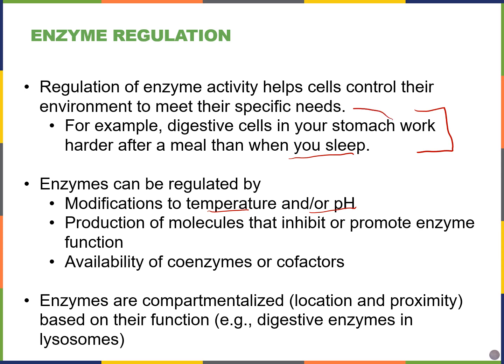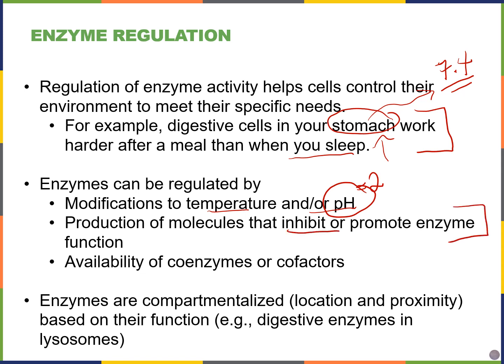The stomach is very acidic — pH of 2 or less. The digestive enzymes in the stomach work at that optimal pH. So if someone had an ulcer and those digestive enzymes leaked out of the stomach into the blood, the blood has a pH of about 7.4. Those pH-2 enzymes that work well in the stomach will not work in the blood, so we don't have to worry about those enzymes chopping up the proteins we need to survive. We can also make molecules that promote or inhibit enzyme function.